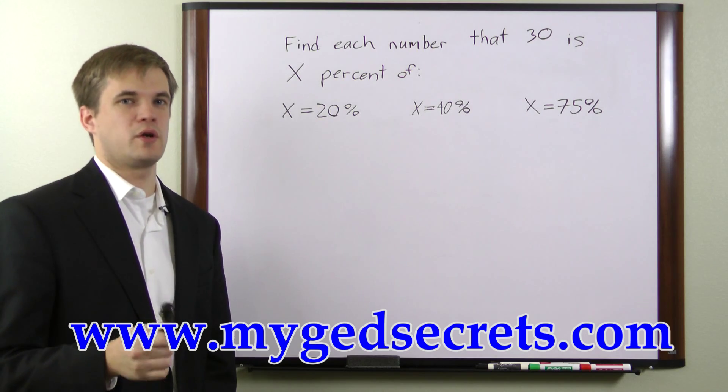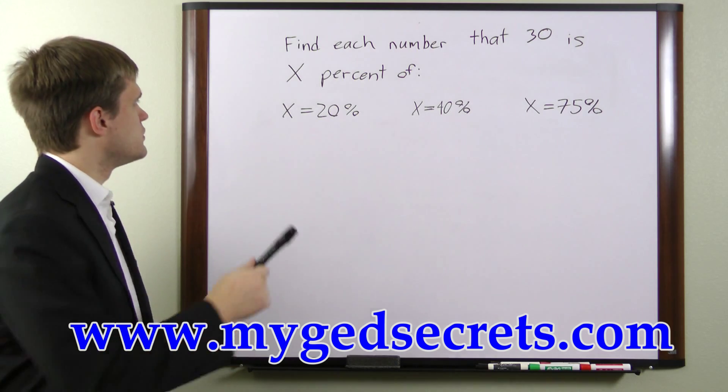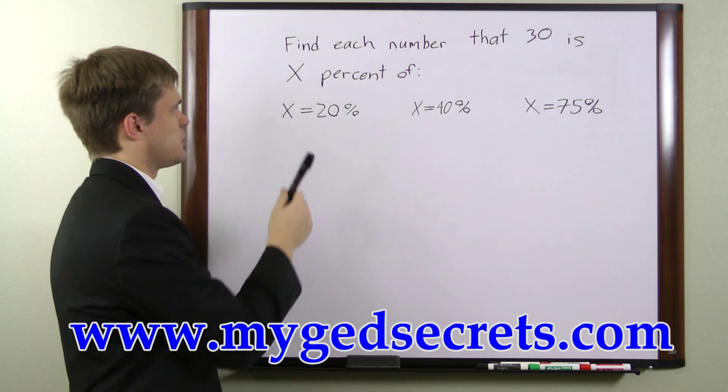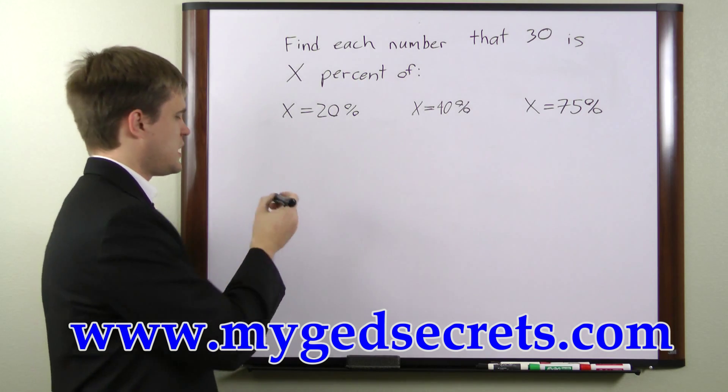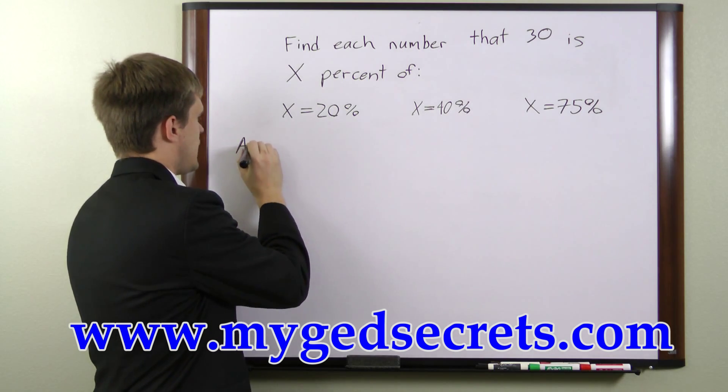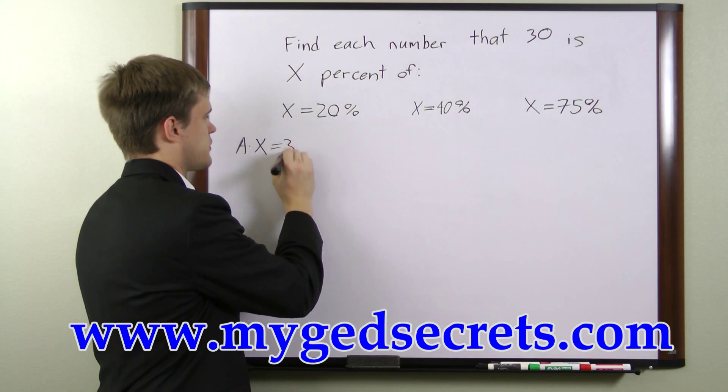To do this, we need to figure out what equation to use. We'll use a to represent the number we're looking for. We can say that a times x percent is equal to 30.